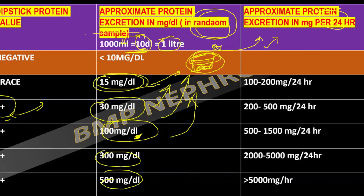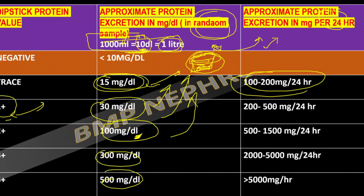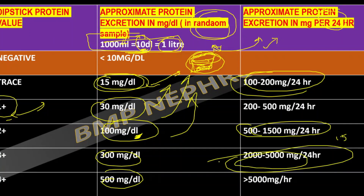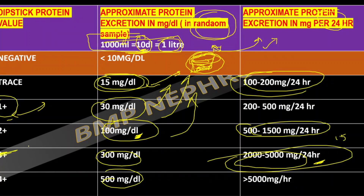For the 24-hour excretion estimate: if the dipstick shows trace, the patient may be excreting around 100 to 200 milligrams per 24 hours. If it crosses 2+, it is around 1500 milligrams per 24 hours, which is 1.5 grams. A 3+ result falls in the nephrotic range, meaning the patient may be excreting nephrotic-range proteinuria in 24 hours — which is why 24-hour quantification is needed.